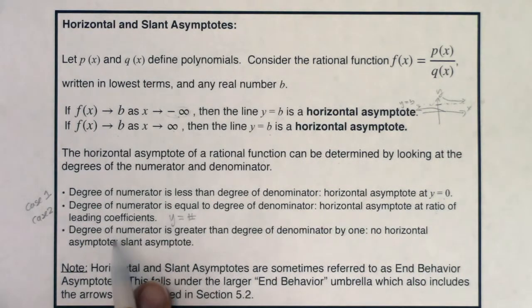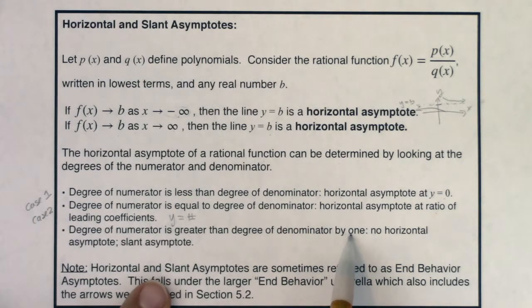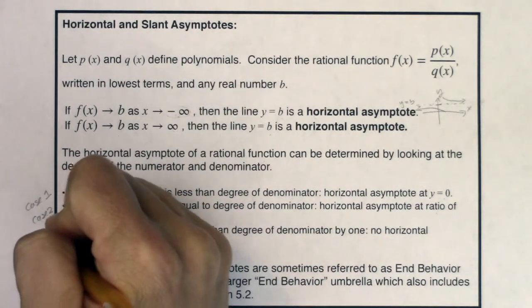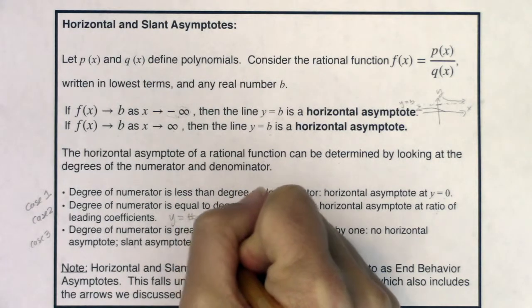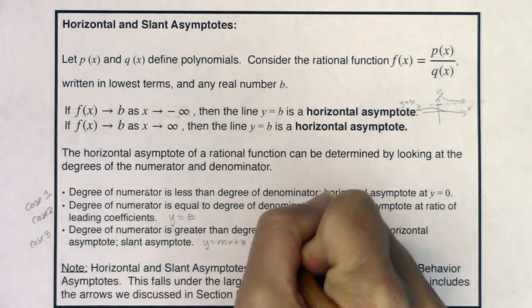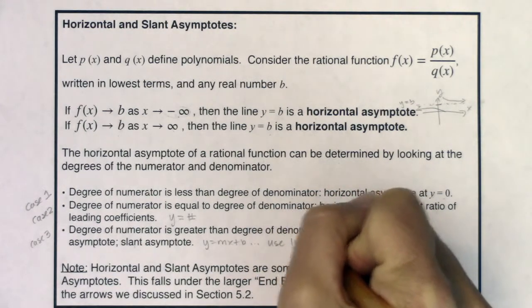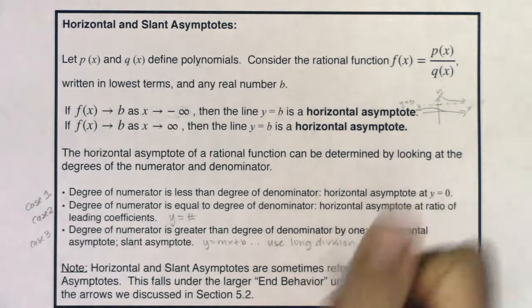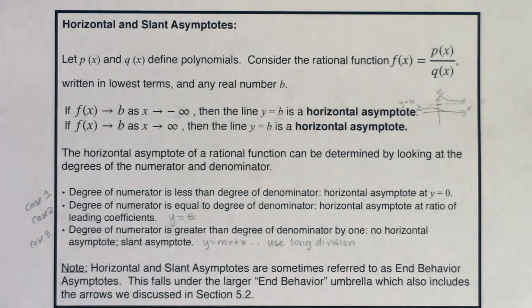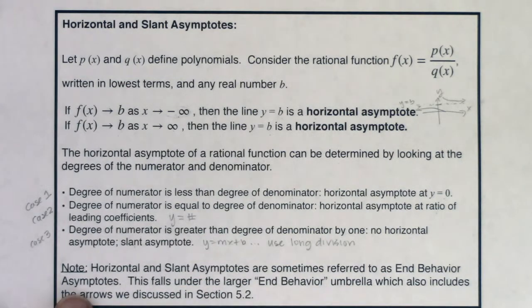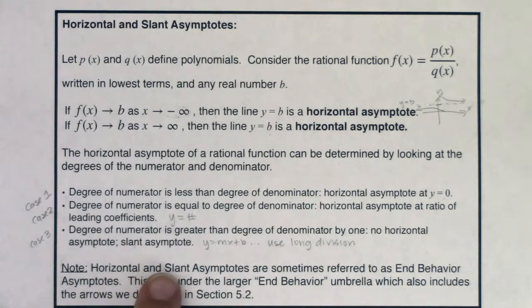There will also come a time when the degree of your numerator is greater than the degree of your denominator by exactly one. If that's the situation, you don't have a horizontal asymptote — you actually have a slant asymptote. This is case three. How you will get your slant asymptote equation of y equaling mx plus b, you're going to use polynomial long division like we did back in section 5.4. These are only three of the cases — we haven't gotten to the arrows case yet. Sometimes horizontal and slant asymptotes are referred to as end behavior asymptotes. And again, you can't have both — it's one or the other.